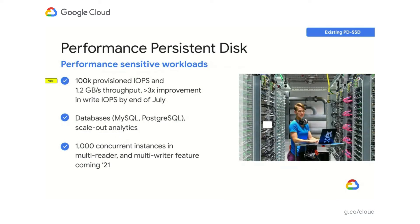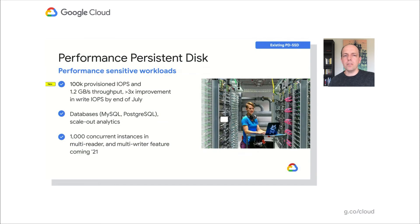Performance PD is our new name for PD SSD, as it continues to evolve and focus on performance-sensitive workloads. This year, we have already increased read IOPS from 60,000 to 100,000. And this month, we are increasing write IOPS for zonal Performance PD from 30,000 to 100,000 as well. Similarly, this month we are also increasing write throughput from 800 to 1,200 megabytes per second, so zonal Performance PD will have full read/write parity going forward. Customers running databases with write-heavy workloads should see noticeable improvements in performance, from a three-fold increase in write IOPS and 50% improvement in write throughput.